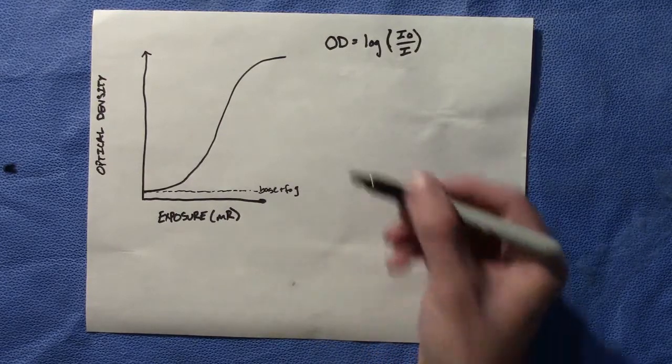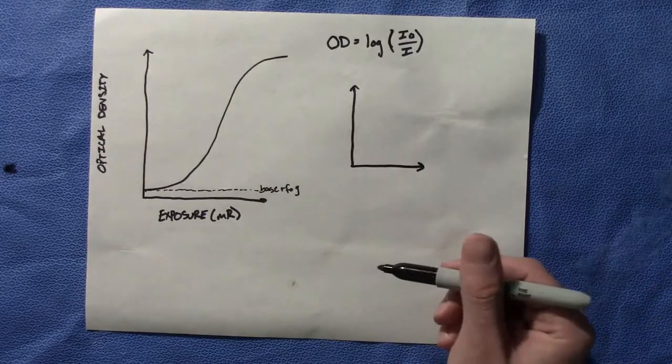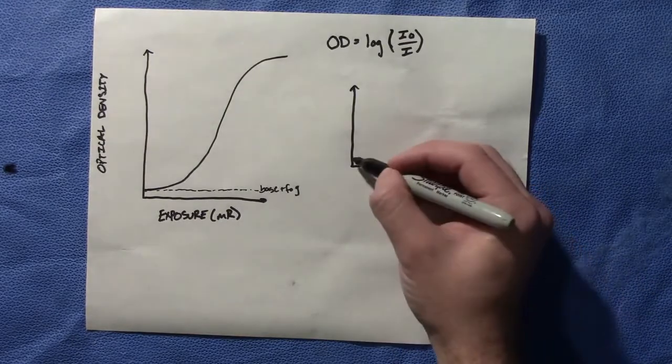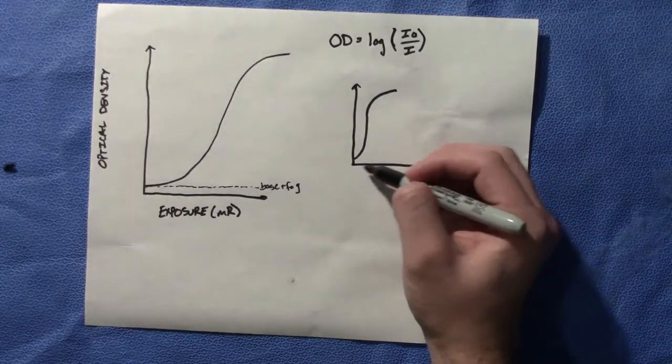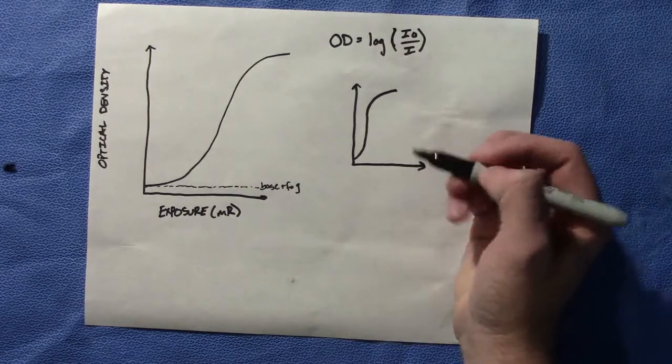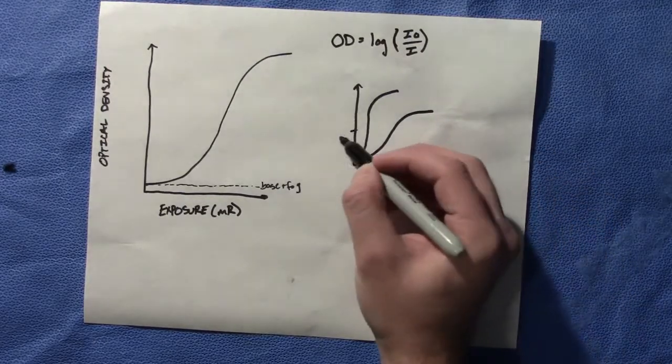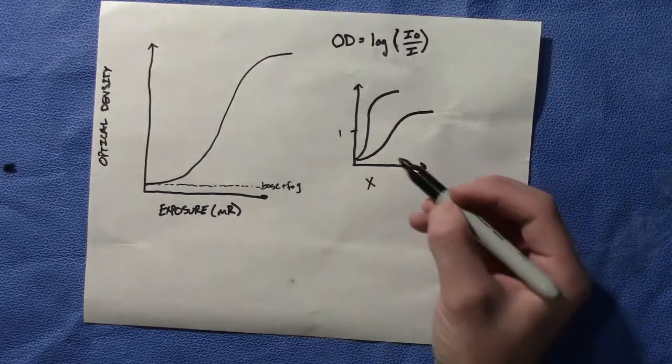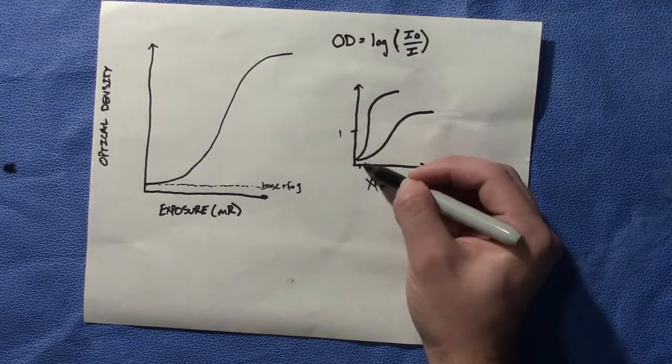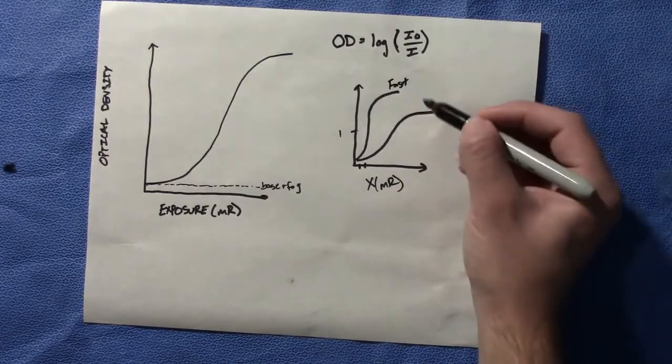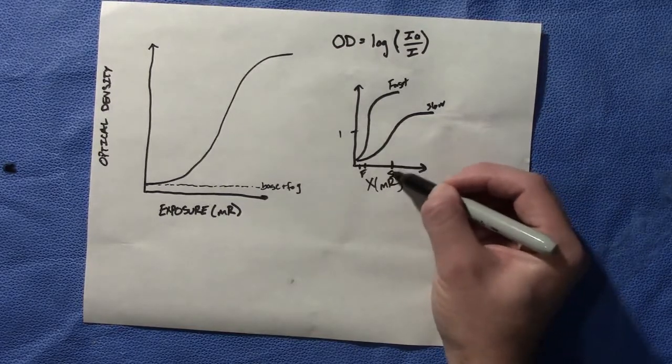A fast film requires little radiation to reach an optical density of one, so it takes very little exposure to hit an optical density of one. A slower film may start with the same base and fog but looks like this. It takes a lot less radiation to hit an optical density of one for our fast film versus our slow film, which requires more exposure for the same optical density.